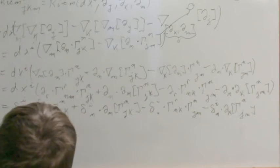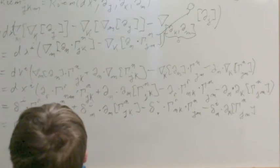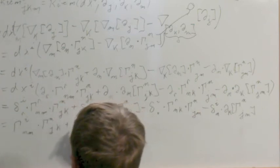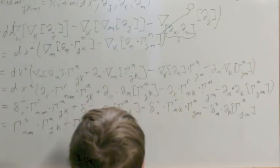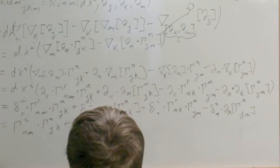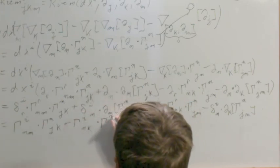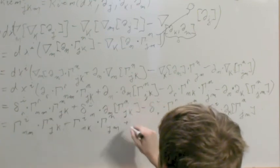And so in finale we get gamma I, N, M times gamma N, J, K, plus I'm going to move this one over here, so minus gamma I, N, K times gamma N, J, M.